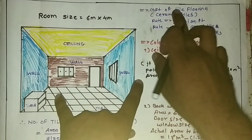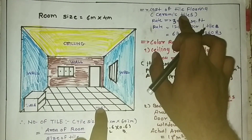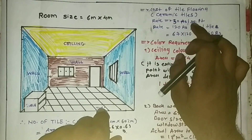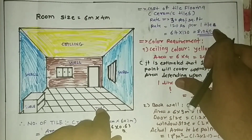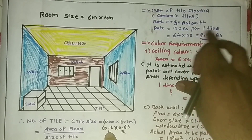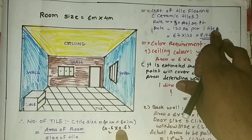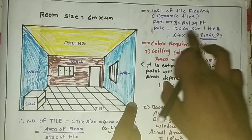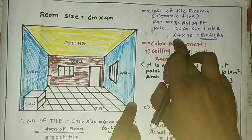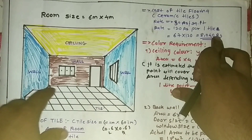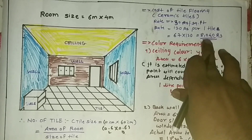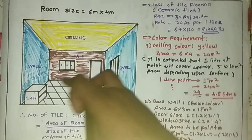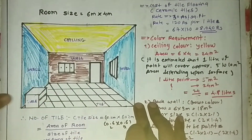Now for the cost of tiles — I am talking about ceramic tiles. The rate of ceramic tiles is 30 rupees per square foot, which is around 120 rupees per tile for a 60×60 cm tile. So one tile costs 120 rupees. For 67 tiles, the total cost will be 8,000 rupees.